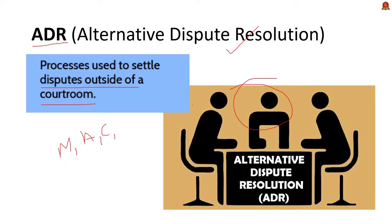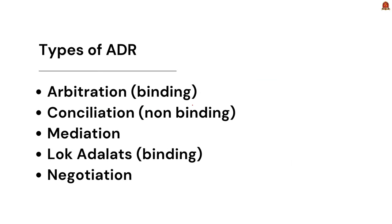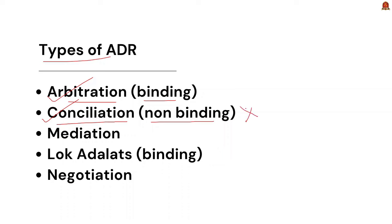There are many types of ADR mechanism. The first one is arbitration — a formal process where disputes are resolved by an arbitrator whose decision is usually binding and final. It is less formal than court process and allows limited judicial intervention. The next is conciliation, which involves a conciliator who helps the parties to reach a mutual agreement. Unlike arbitration, the conciliator's suggestions are not binding on the parties unless they are accepted by both disputing parties.